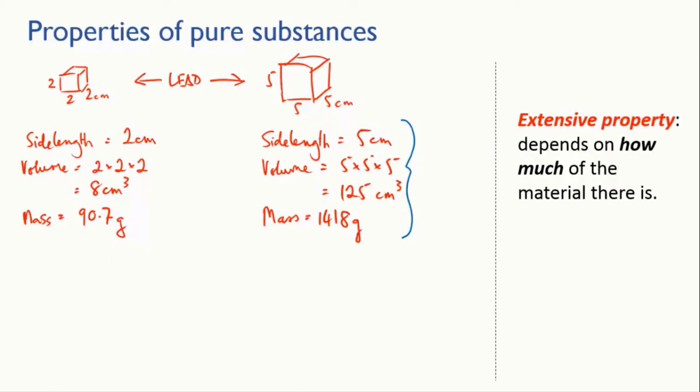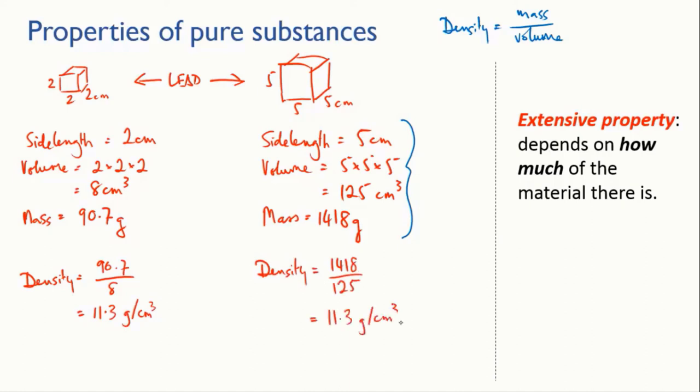But what our two blocks of lead do have in common, though, is density. Now you can work this out for yourself. Density is calculated as mass divided by volume. Pause the video and calculate the density for each block. What do you get? You get the same value.